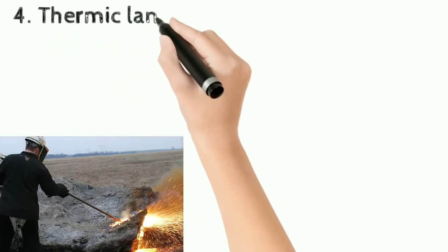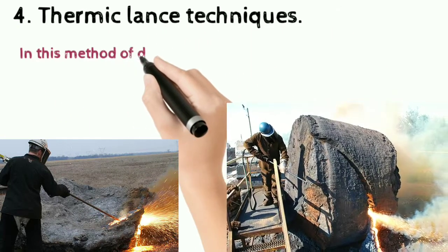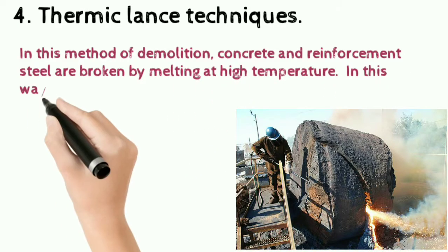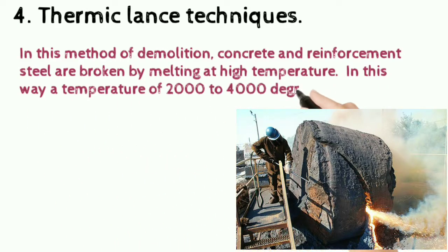4. Thermalance Technics: In this method of demolition, concrete and reinforcement steel are broken by melting at high temperature. In this way, a temperature of 2000 to 4000 degrees Celsius is produced.